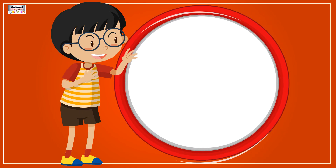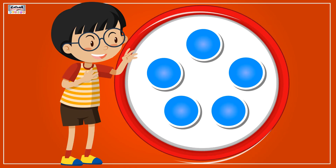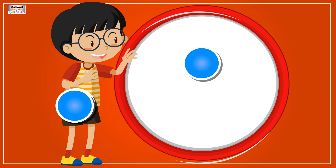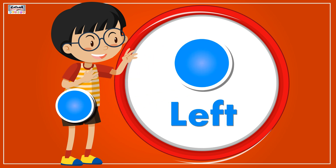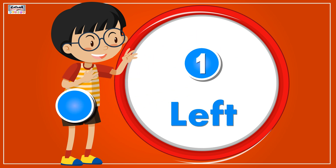Out of 5 circles, if 4 are taken away, then only 1 is left.